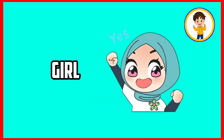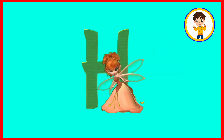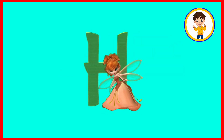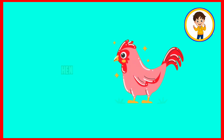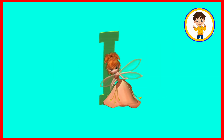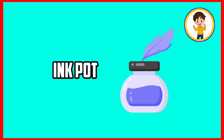G. G is for girl. Girl means lardki. H. H is for hen. Hen means murgi. I. I is for inkpot. Inkpot means dhwat.